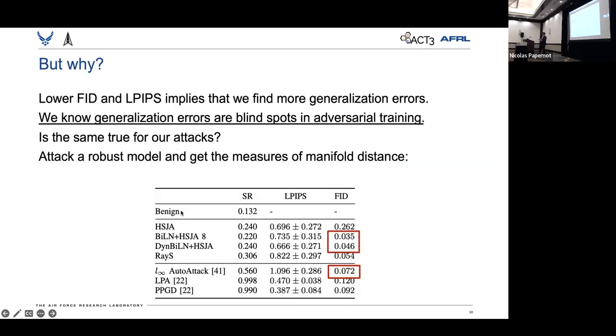What we finally look at is, we can achieve that lower FID and the lower LPIPS, and we know that these generalization errors that we're finding are actually blind spots in adversarial training, thanks to previous work.